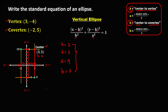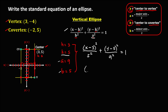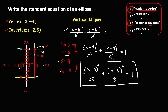Now that we have all four values, we can write the standard equation. Substituting into the formula: (x − 3)² / 5² + (y − 5)² / 9² = 1. Simplifying, this becomes (x − 3)² / 25 + (y − 5)² / 81 = 1. This is the standard equation for this ellipse.